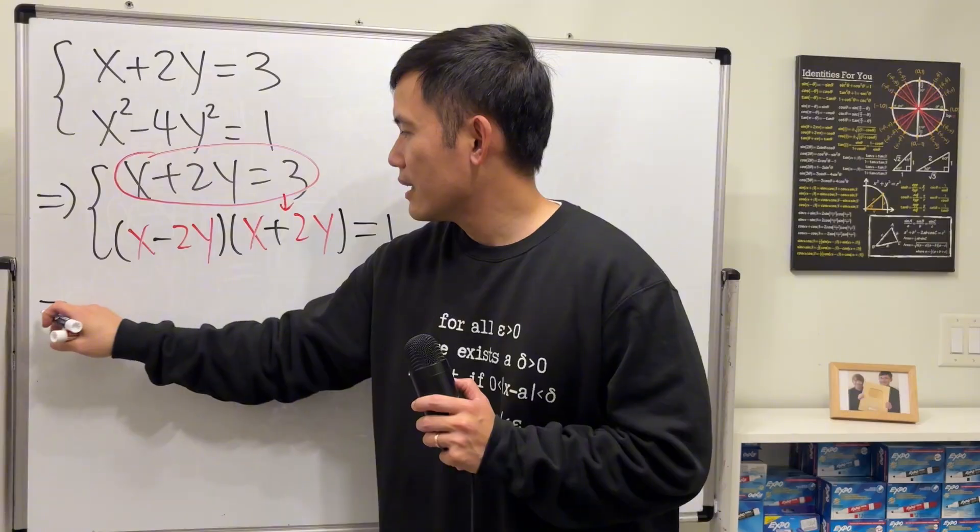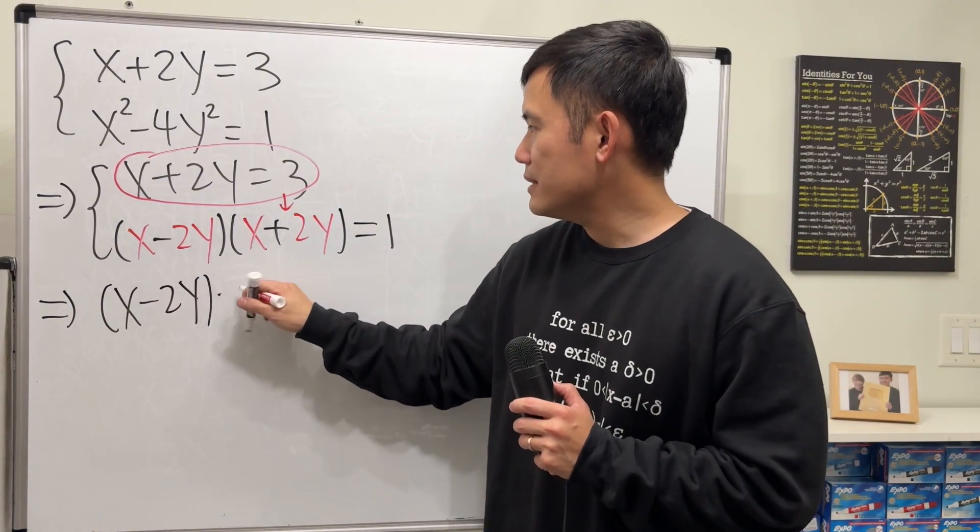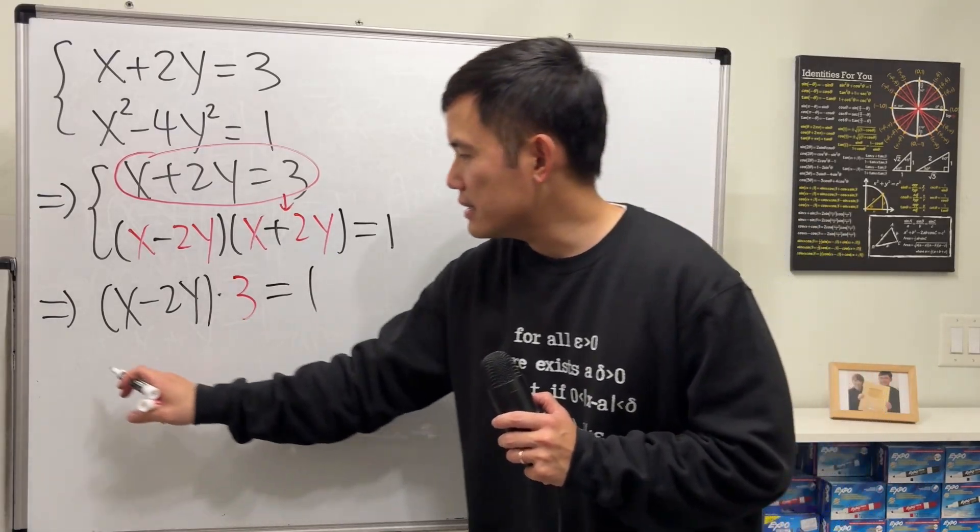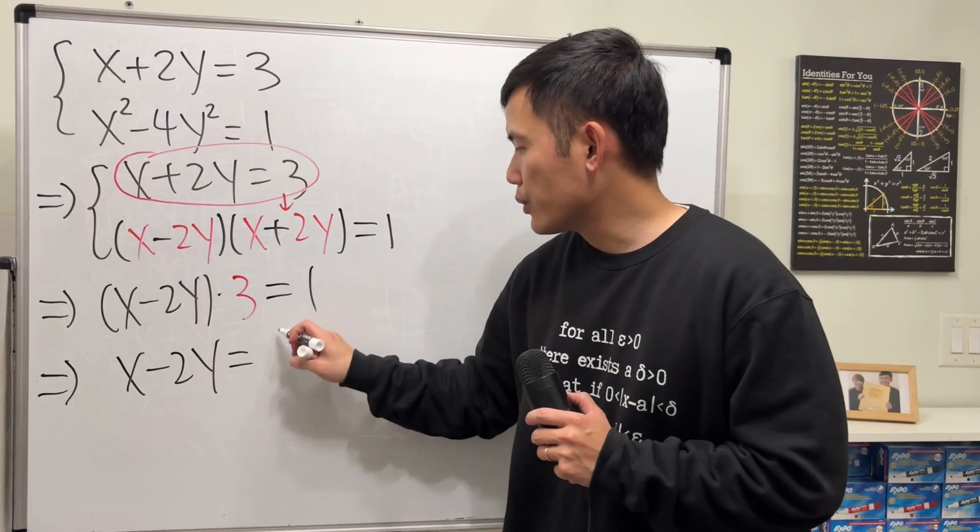we can just say x minus 2y times 3 equals 1. And then we can just divide 3 on both sides. So we get x minus 2y equals 1 third.